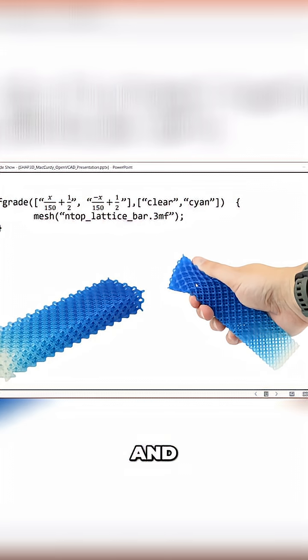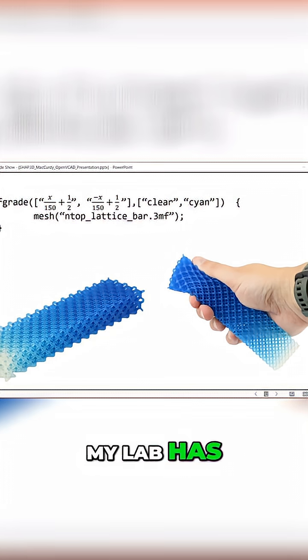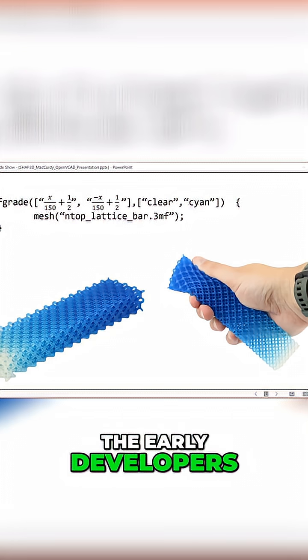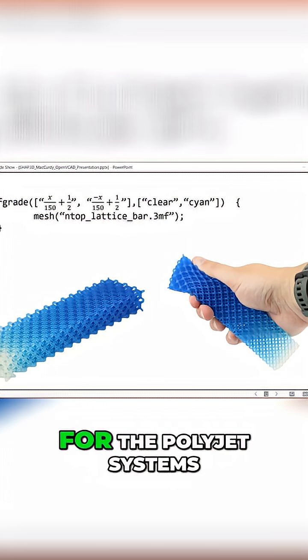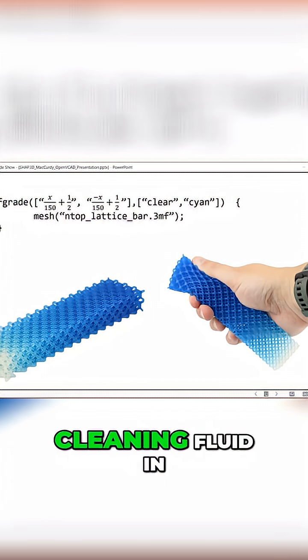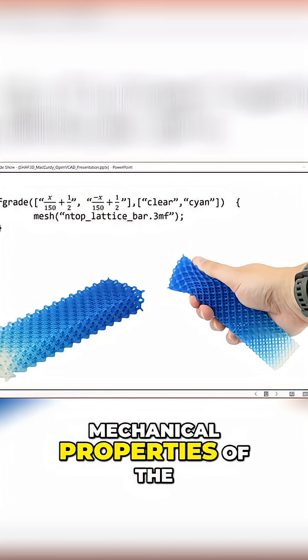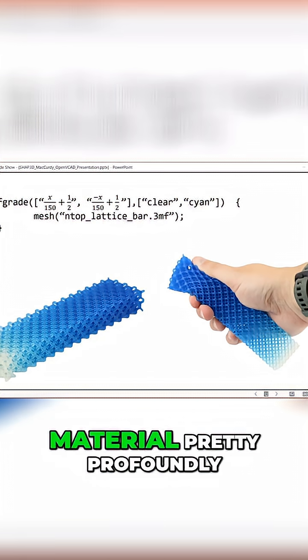Although it's not the focus of this talk, my lab has been one of the early developers of the liquid printing for the PolyJet systems. It turns out that you can mix in a non-curing liquid, which is the cleaning fluid in the PolyJet system. That changes the mechanical properties of the material pretty profoundly.